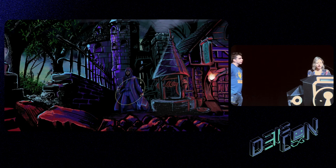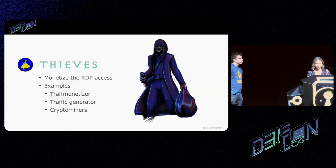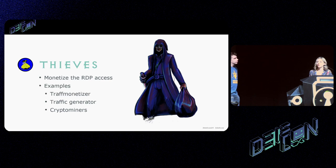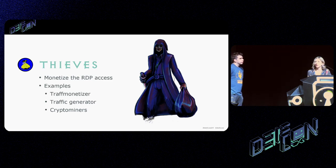The second character is the Thief. The Thief will monetize RDP access in many different ways — tools include residential proxies, monetizing browsers that participate in pay-to-surf schemes, crypto miners, and Android emulators to do fraud. All kinds of different methods to monetize the access.